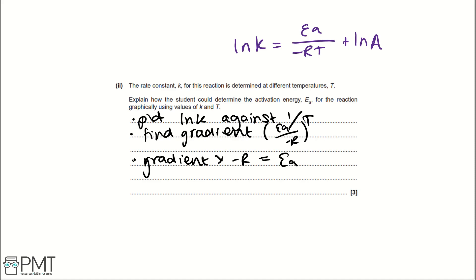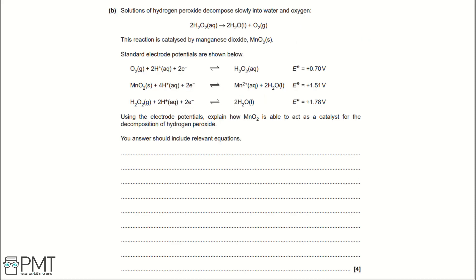For this question, you get a mark for each of the bullet points that I've drawn up here. So, one for saying plot lnK against 1 over T, one for finding the gradient, and one for saying that the gradient multiplied by minus R equals EA.